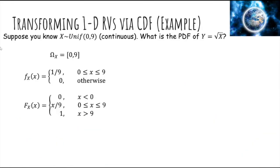Suppose, as an example, that X is uniform from 0 to 9, continuous. So what is the pdf of Y, which is the square root of X? First, let's write down the range of X, which is from 0 to 9, and the pdf of X, which is just uniform between 0 and 9, and 0 elsewhere.